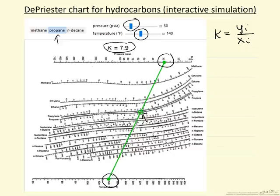Now the simulation just reads off the values for three components, but on this chart you can read them off for any of the other hydrocarbons that are listed here. We'll look at the simulation to demonstrate what happens if we change the pressure and change the temperature.